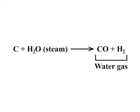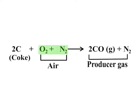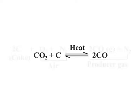Carbon reacts with steam to form carbon monoxide and hydrogen. Carbon monoxide can be separated by liquefaction. If air is passed over red hot coke instead of steam, producer gas is formed, which is a mixture of carbon monoxide and nitrogen. From producer gas, carbon monoxide can be removed by liquefaction.